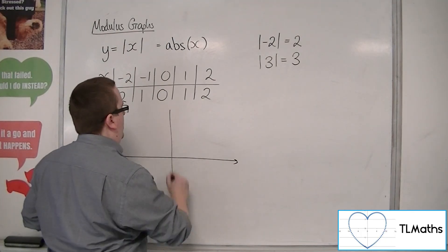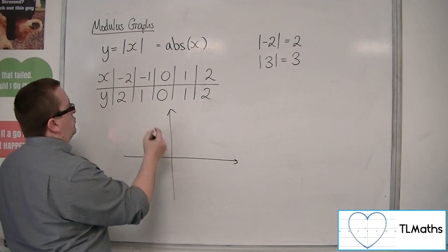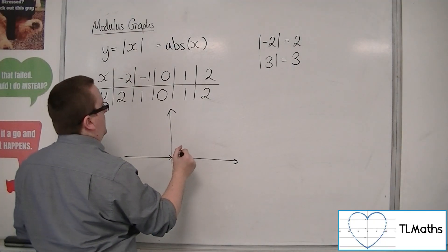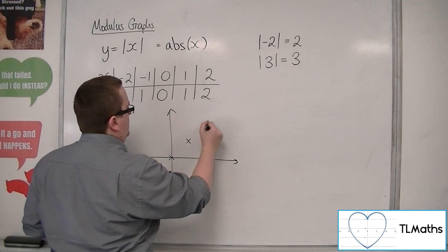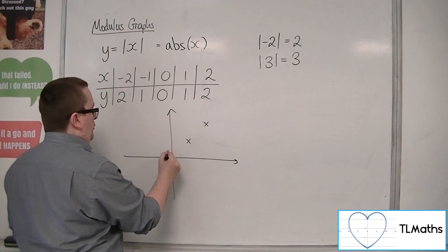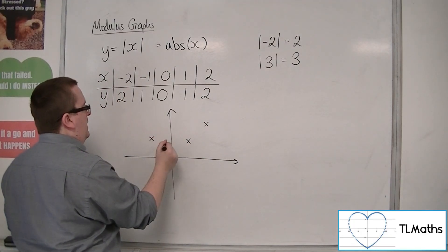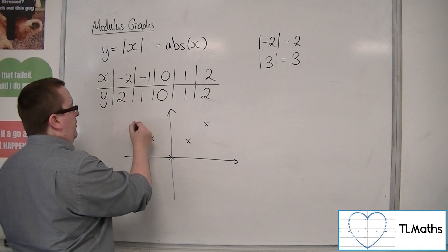OK, so what we have is a graph that is at 0, 0, is at 1, 1, is at 2, 2. It's also at minus 1, 1, and it's also at minus 2, 2.